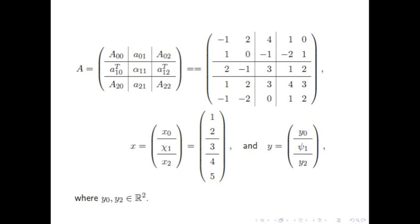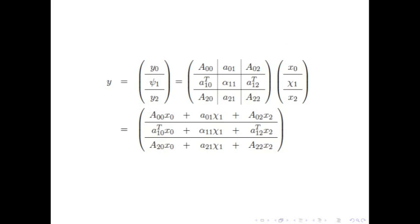In this example, we partition the matrix into a 3 by 3 matrix of submatrices, delineated by the shown lines. Correspondingly, x and y are subdivided into three subvectors. A partitioned matrix-vector multiplication is now a matrix-vector multiplication where we work with the submatrices and subvectors that result from the partitioning.